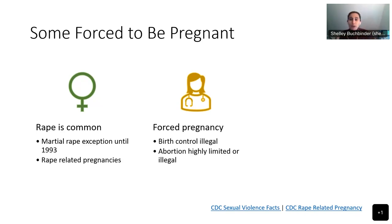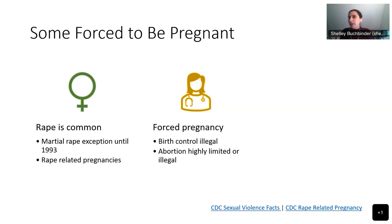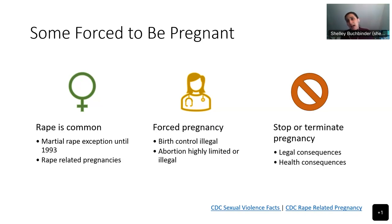This kind of sexual coercion, whether rape or pressure, can lead to forced pregnancy. This is in part because hormonal birth control that women could control was illegal for most women until 1972, and abortion was highly limited — often only available to wealthy women who could access private obstetricians. For most women, it was highly limited and illegal. Trying to stop or terminate a pregnancy had legal consequences for violating bans on abortion or birth control, and also health consequences from accessing illegal and often dangerous services.